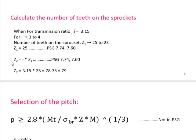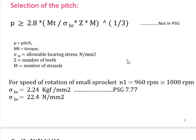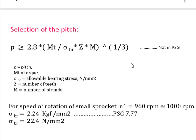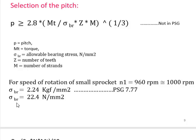Z2 is the number of teeth on the driven sprocket. Using the transmission ratio, Z2 equals 79. After calculating Z1 and Z2, we find the pitch of the chain link. The formula is: P = cube root of (MT / (σBR × Z × M)). This formula is not in the design data book, so you need to remember it. P is pitch, MT is torque, σBR is allowable bearing stress, Z is number of teeth, and M is number of strands. The allowable bearing stress σBR is given in design data book 7.77 with respect to speed; at around 1000 RPM, σBR is 2.24.